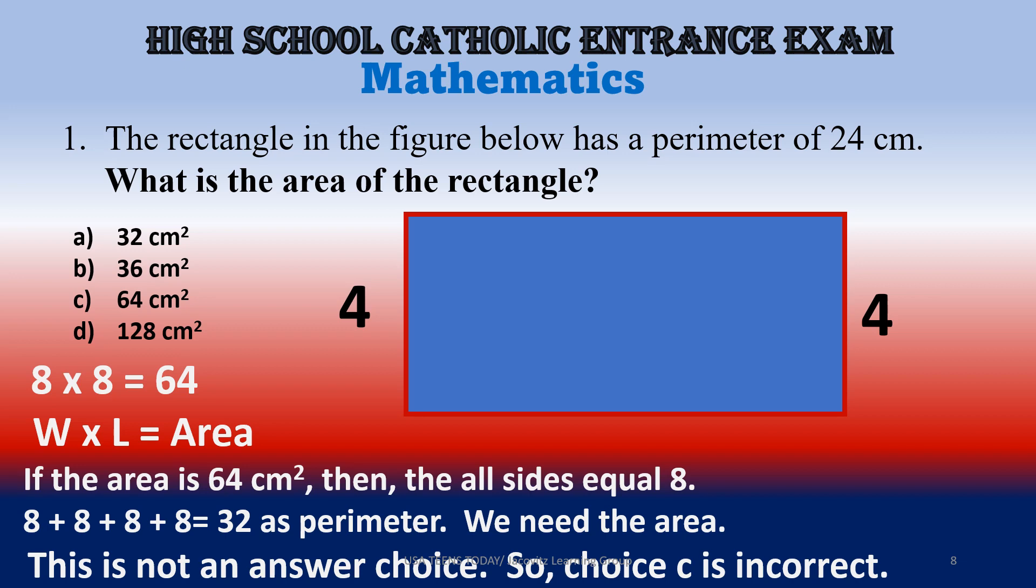If your side for choice C was 64, that would mean that this side here would be eight and this side here would be eight. But you were already given a side of four, so that can't be true. Now this can still be eight, but this can't be. See what I mean? Because here's what would happen: eight plus eight plus eight plus eight does not equal 32 as a perimeter, and they've already told you that 24 cm is your perimeter. So eight times eight would be 64 as an area, because area equals length times width. But guess what? You can't do that because then you'd have eight times eight, and then you'd also have eight here, eight here, eight here, and eight here, and that would be too much. So now choice C is out.